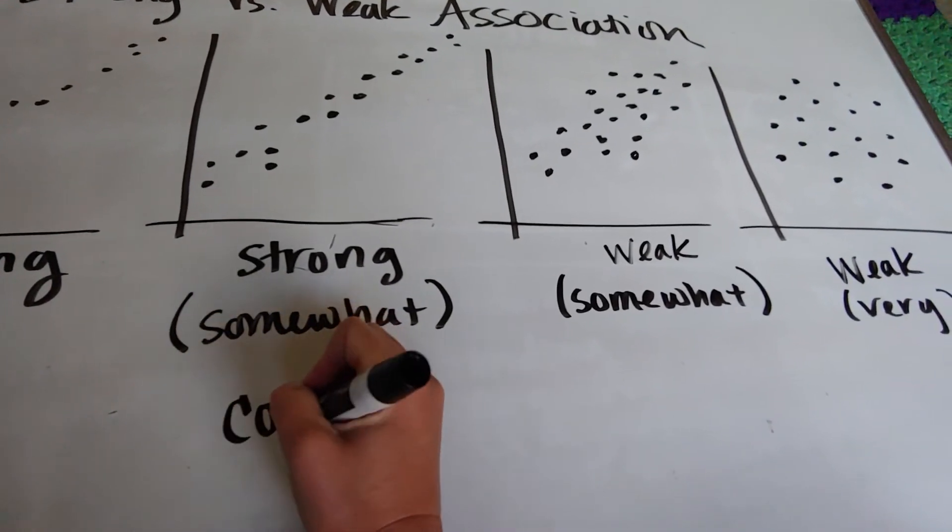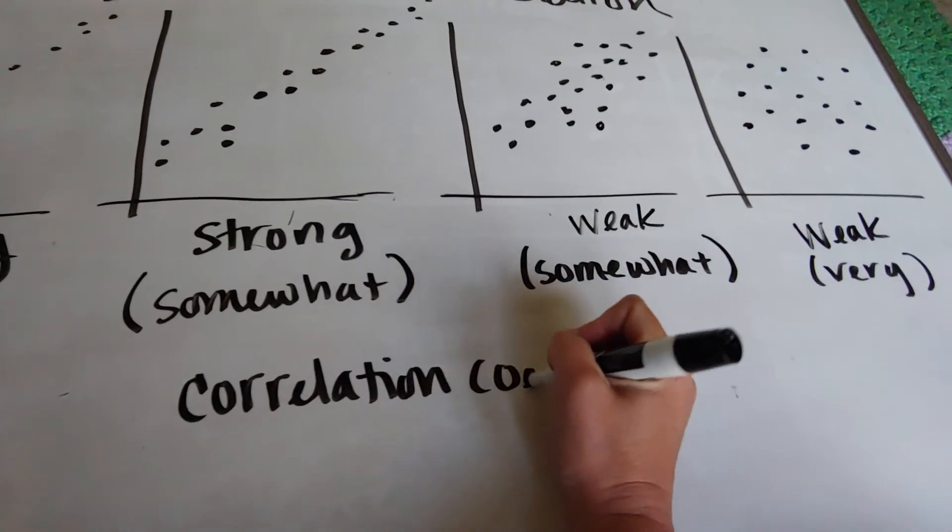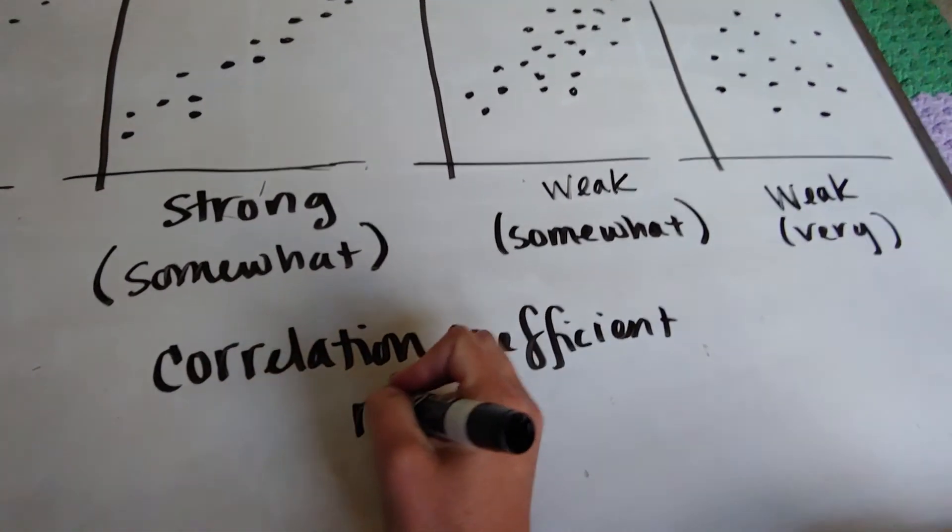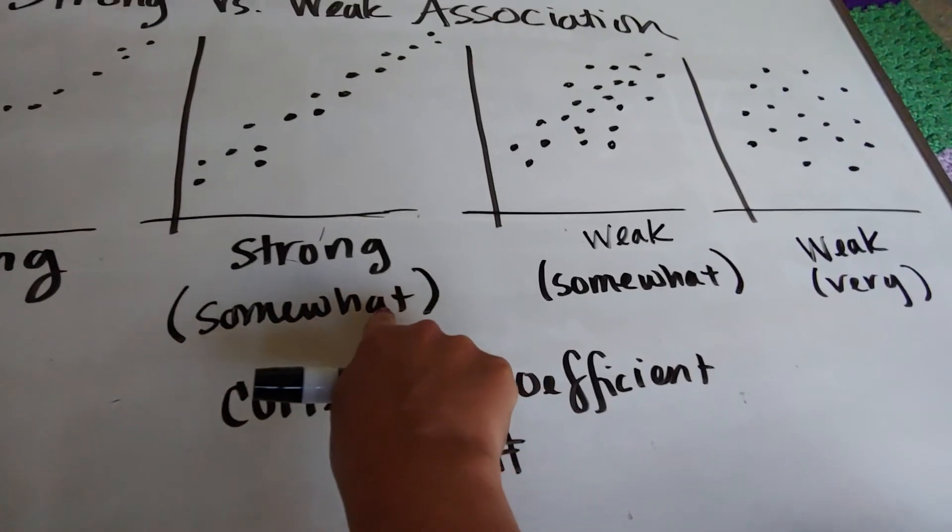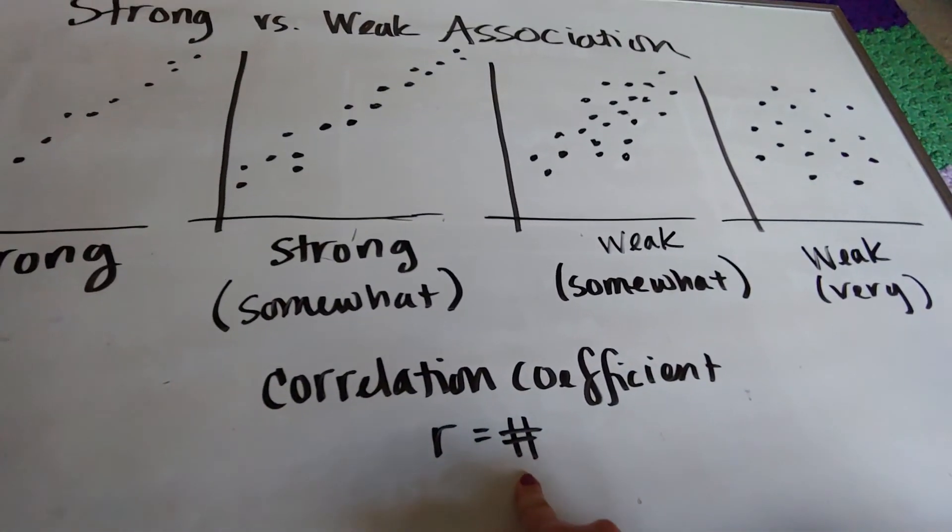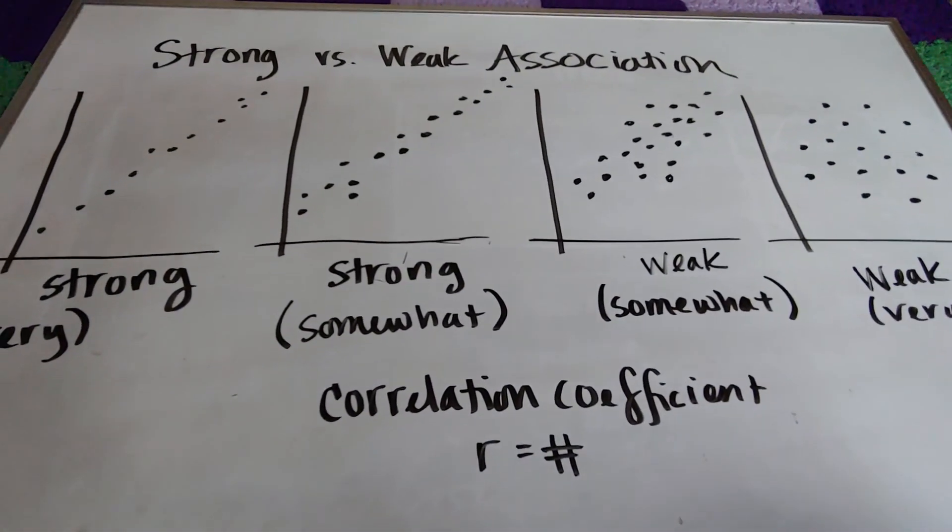we're going to talk about the correlation coefficient, r, and r is a number. And that number will help us decide whether we're gray or whether we're very strong. So this will help back up how we're making these choices. So hang in there. It's all going to come together.